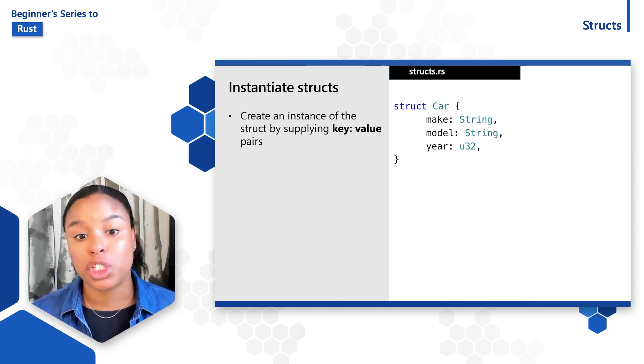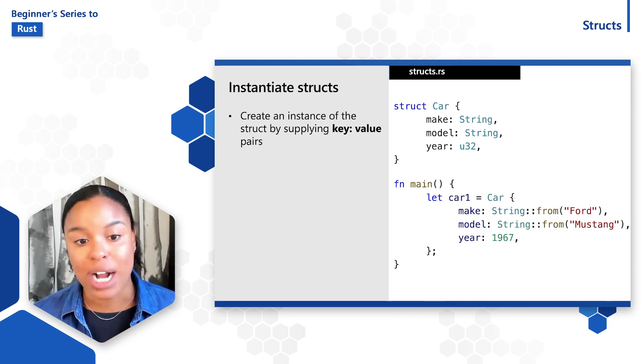And then to use the struct after we've defined it, we create an instance of the struct by supplying the key value pairs, where keys are the names of the fields, and values are the data that we store in those fields. So to instantiate the car struct, we could do the following.